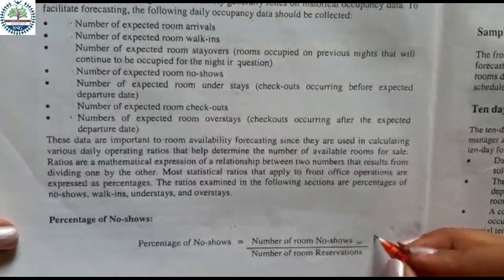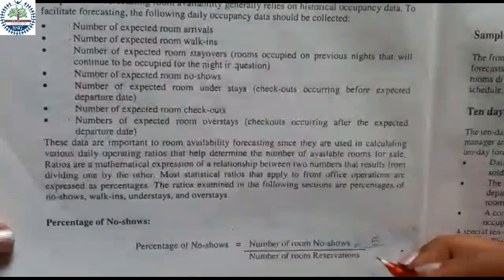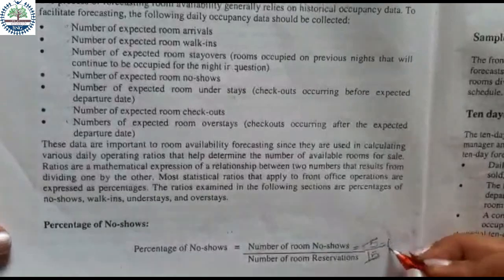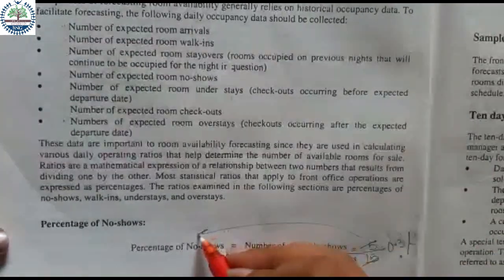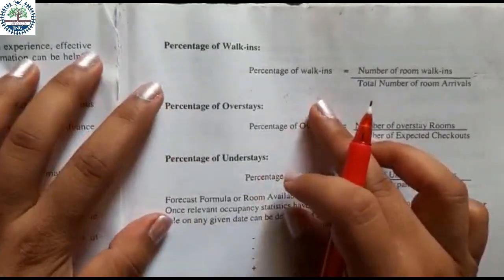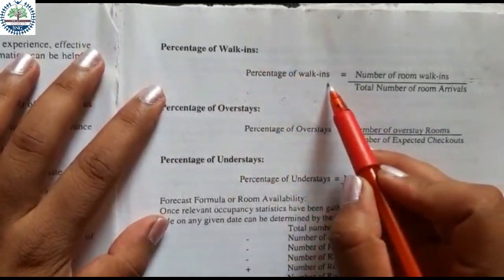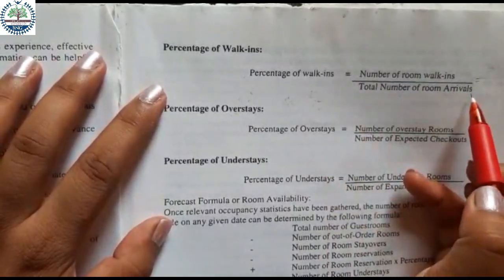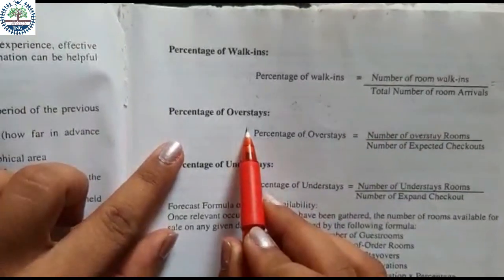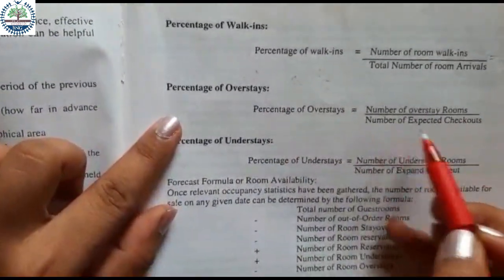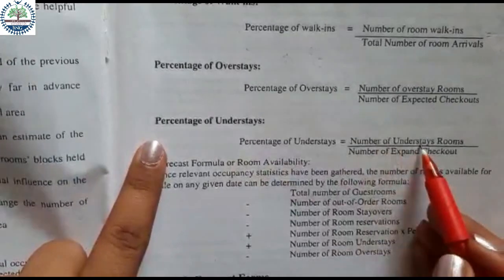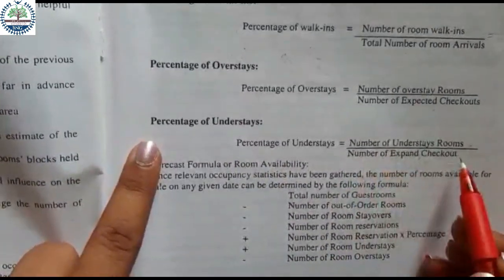For example, the number of no-shows for today is 5 and the total number of room reservations for today is 15. If you calculate that, the value comes to 0.3% — that is your percentage of no-shows. Similarly, percentage of walk-ins = number of room walk-ins divided by total number of room arrivals. Percentage of overstays = number of overstay rooms divided by number of expected checkouts. Percentage of understay = number of understay rooms divided by number of expected checkouts.